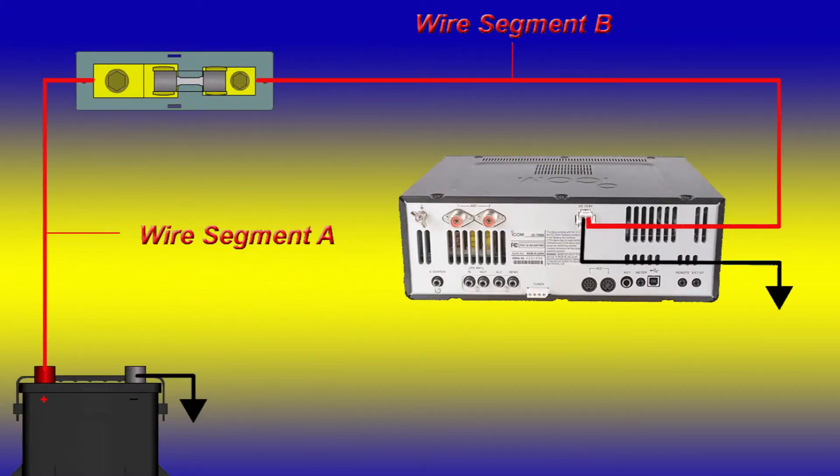Now we're going to show you a couple simple circuits. In the first diagram, one of the most important things to understand is that segment A is not protected in any way. If it were to be shorted to ground, either the wire or the battery would be damaged. In either case, there would most likely be some kind of electrical fire. This is why the wire must be short: 12 to 18 inches is the maximum recommended.